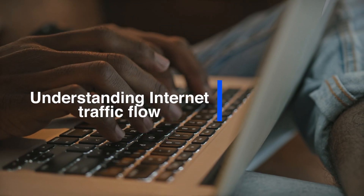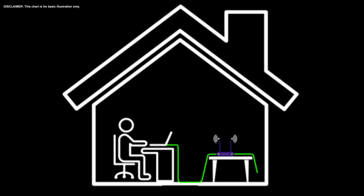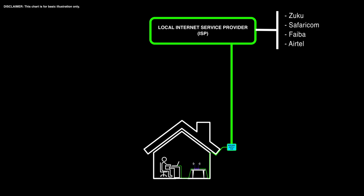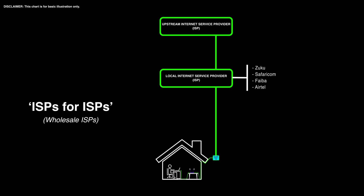Suppose you're watching the video on your laptop. The laptop is connected to the internet via Wi-Fi or via Ethernet cable, which is connected to a router. The router receives internet from your local internet service provider, such as Zuku, Safaricom Fiber, and others. But where do they get their internet? Just as customers pay them for internet access, ISPs themselves pay upstream ISPs for access. These upstream ISPs act as ISPs for ISPs — they provide ultra-high bandwidth connections between local ISPs.